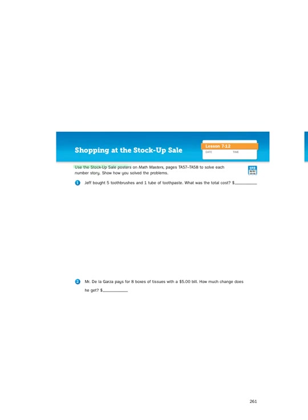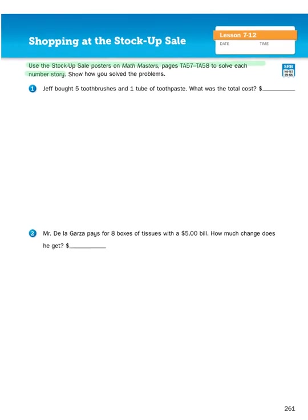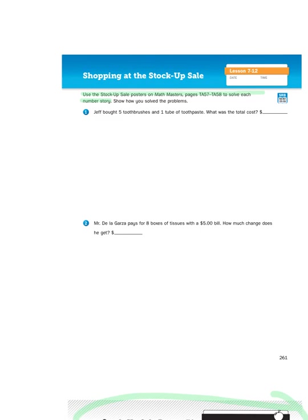Use the stock-up sale posters to solve each number story. So let's take a look at the first number story on this page. Jeff bought five toothbrushes and one tube of toothpaste. What was the total cost? Every time I approach a number story, I want to use the RUCKUS strategy, which is to read the problem multiple times, underline the question, circle important information, come up with an action plan, and then solve the problem.